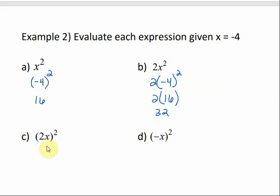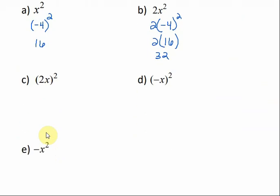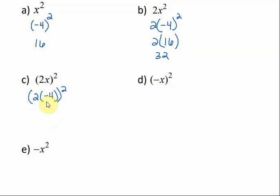Part c has the expression in parentheses. So since it's in parentheses, this would be 2 times negative 4 raised to the second power. These two things are in parentheses and then raised to an exponent, so we do what's in the parentheses first. Inside the parentheses, 2 times negative 4 is negative 8. Then we do the exponent: negative 8 squared would be positive 64.